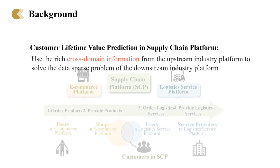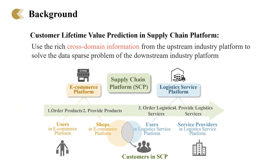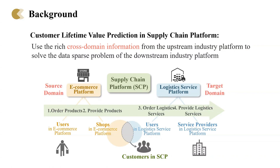Let me illustrate a typical working flow of a supply chain platform, SCP. SCP comprises two linked platforms: an e-commerce platform and a logistics service platform. The overlap between e-commerce platform shops and logistics service platform users represents SCP customers. Leveraging cross-domain information from the e-commerce platform can provide valuable insights for enhancing customer lifetime value prediction on the logistics service platform.